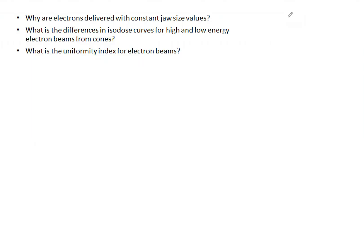So today we're going to talk about electrons and why they are delivered with constant jaw values. What is the difference in isodose curves for high and low energy electron beams from cones specifically, and what is the uniformity index for electron beams?